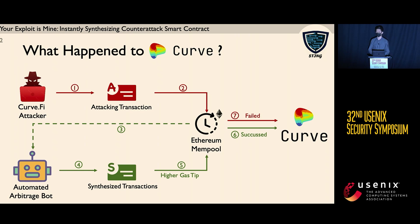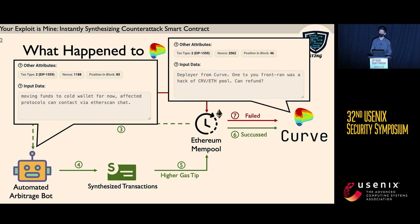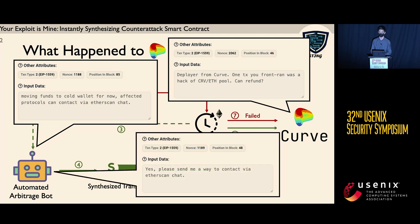As a result, the original attacking transaction failed. This is typically a process which we call front-running. After that, the bot owner realized it was not an arbitrage — it was an attack. So he broadcasted to the blockchain and mentioned that he was willing to return the funds. The Curve Finance developer immediately contacted the bot owner and got the funds returned, which is around 5.4 million USD.